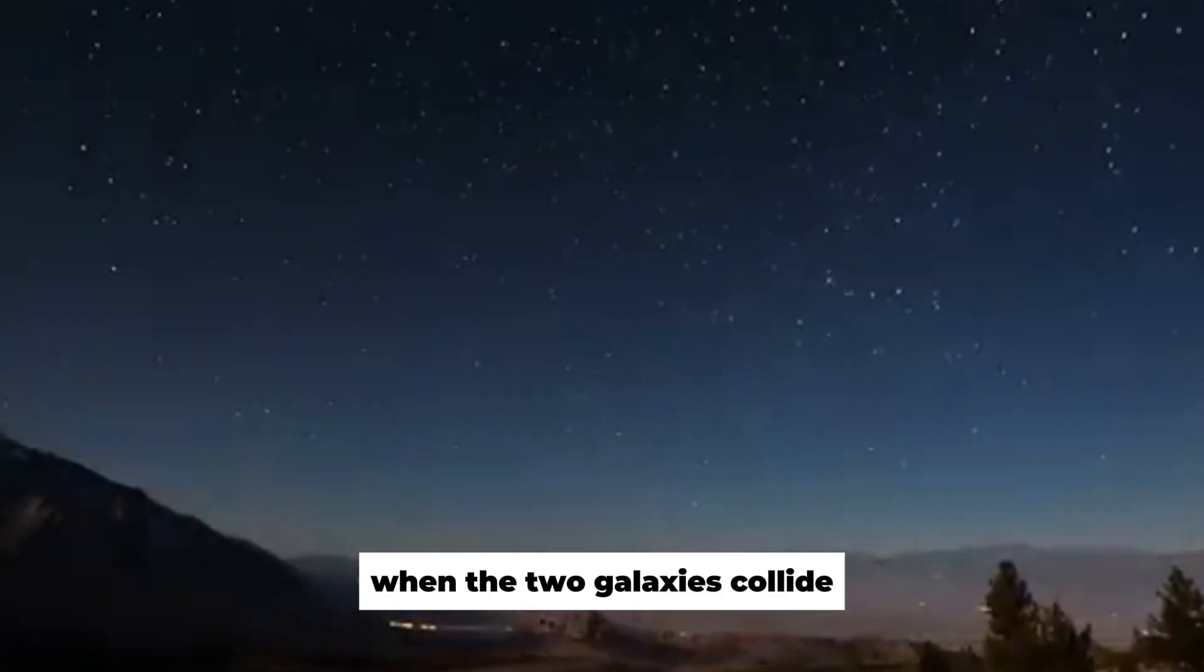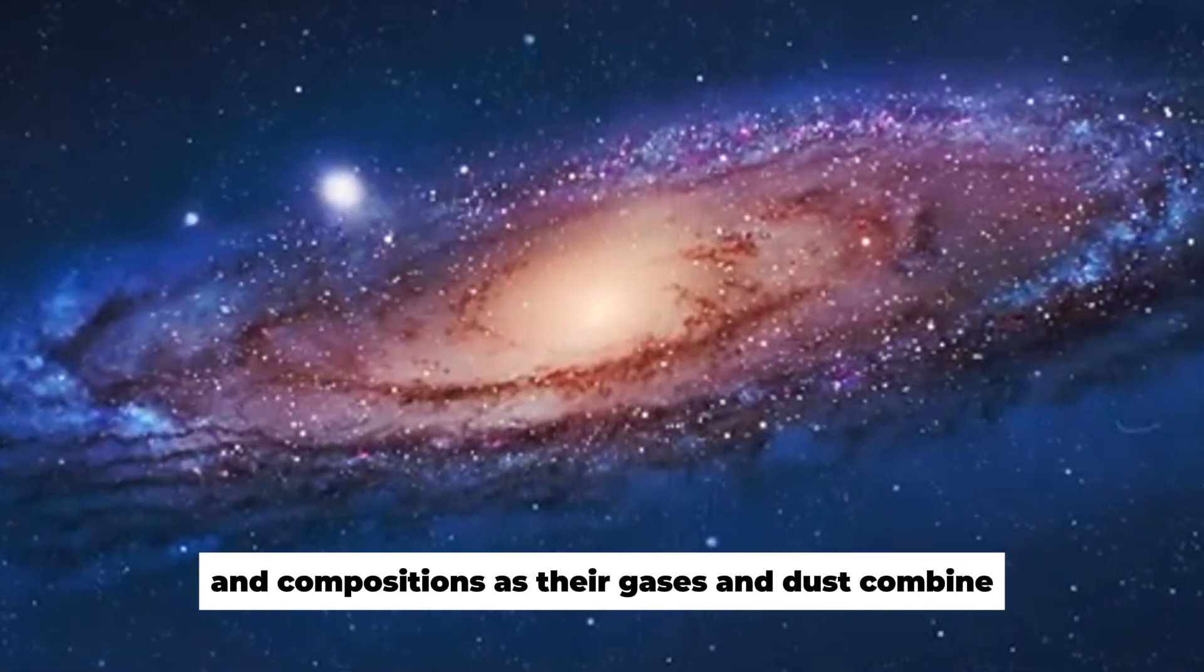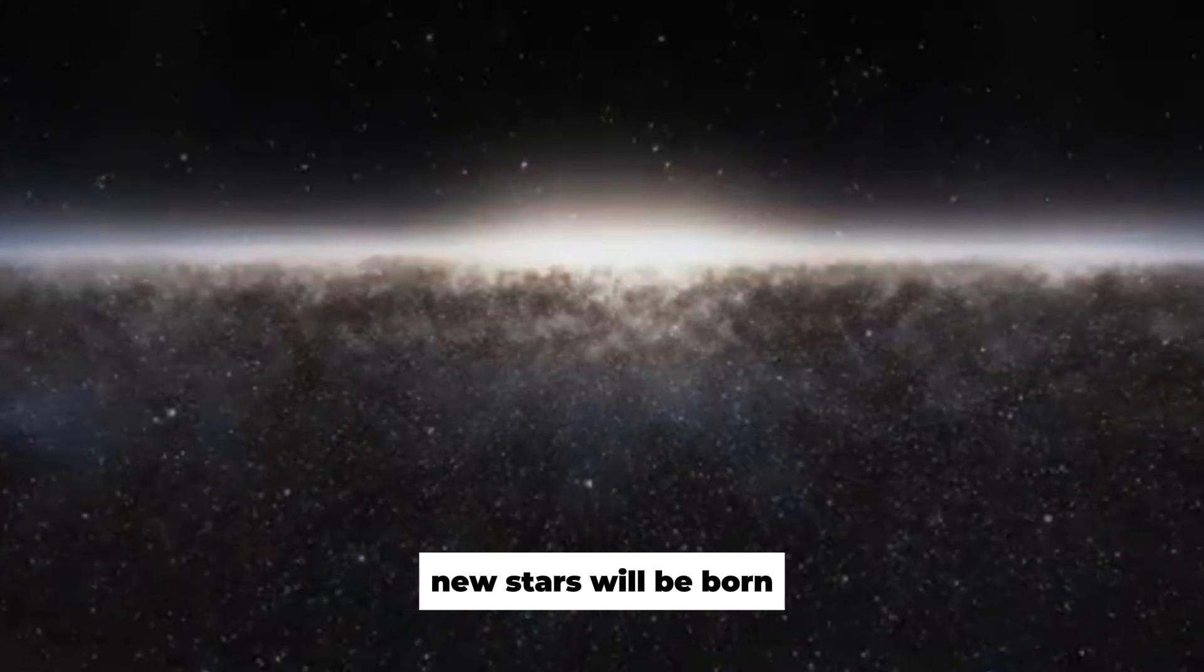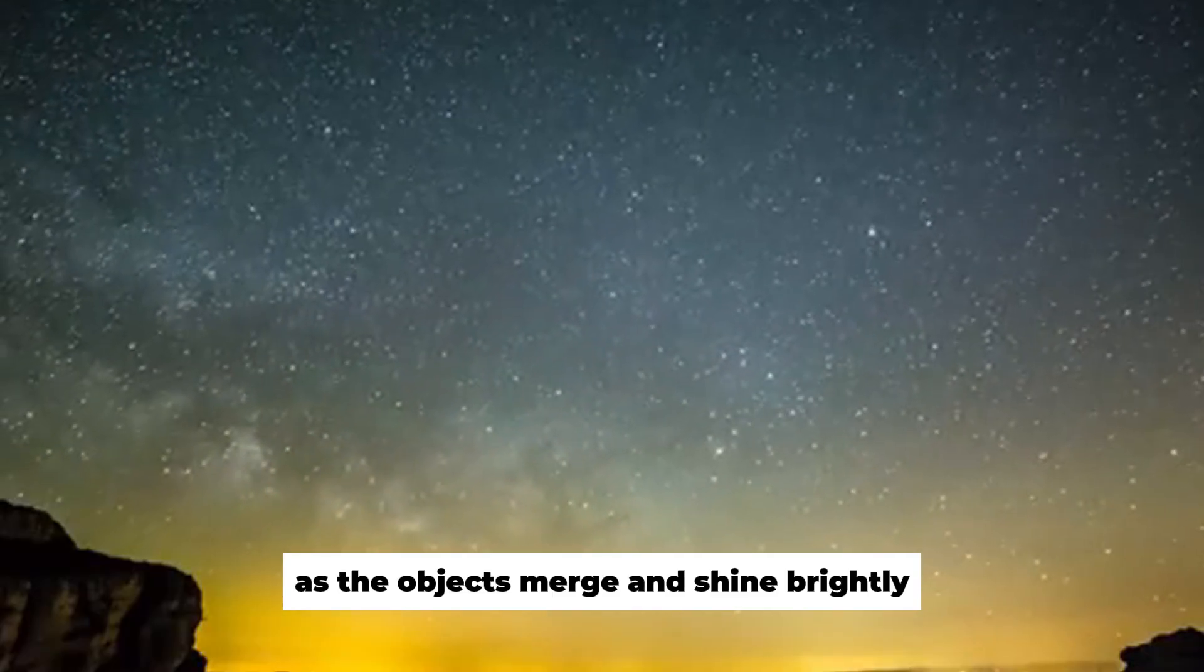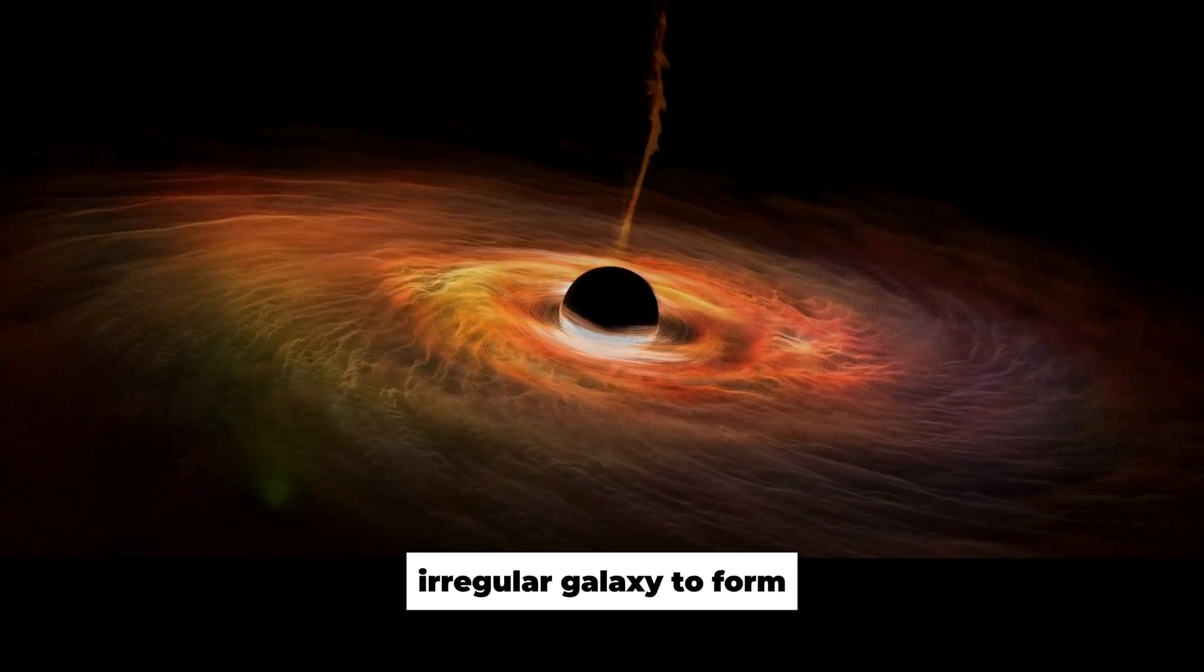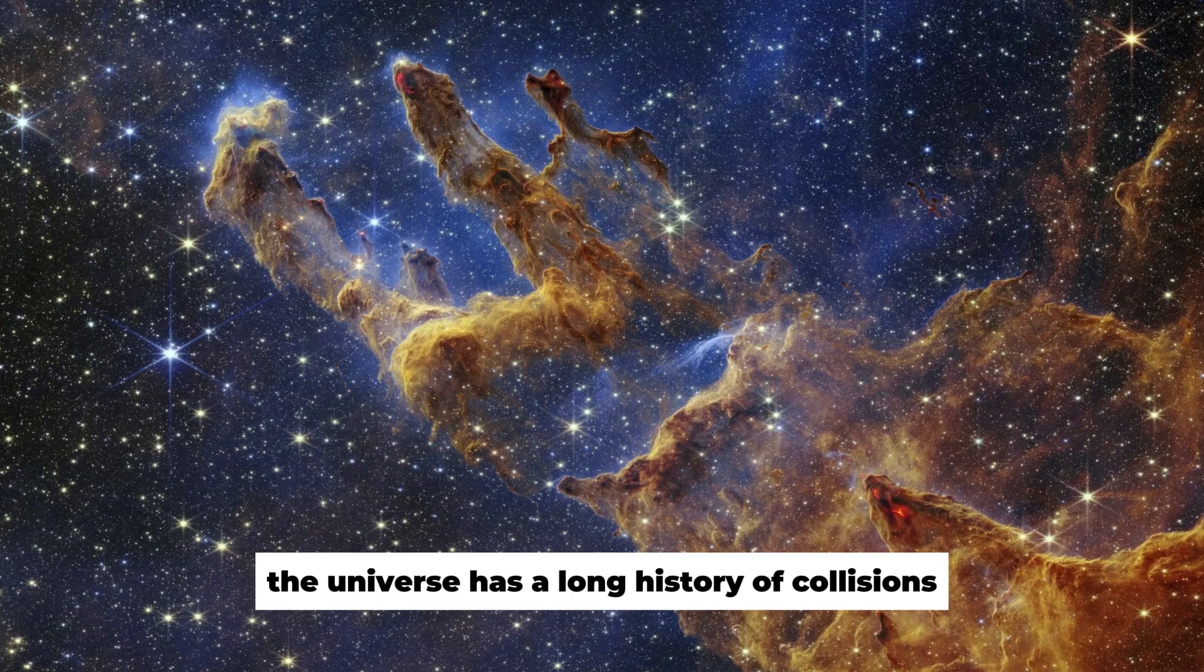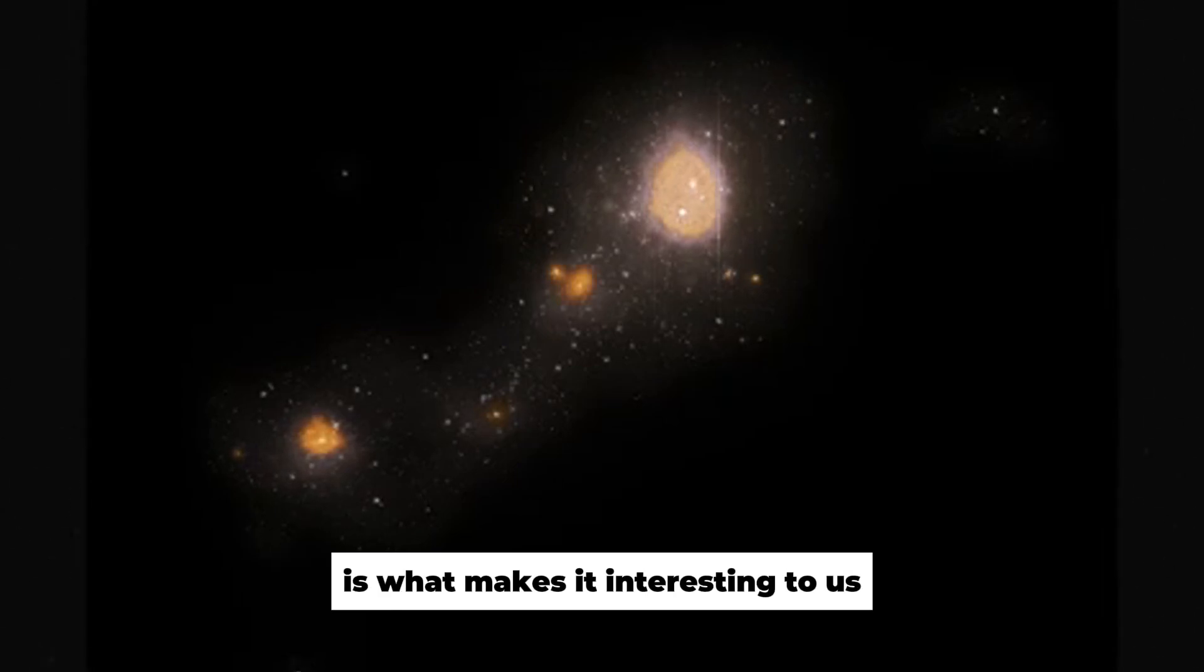When the two galaxies collide, they will have completely changed forms and compositions as their gases and dust combine. New stars will be born, making for a spectacular show in the sky as the objects merge and shine brightly. Finally, this kind of cosmic event will cause a single irregular galaxy to form. The universe has a long history of collisions like this one. But the fact that we can directly take part is what makes it interesting to us.